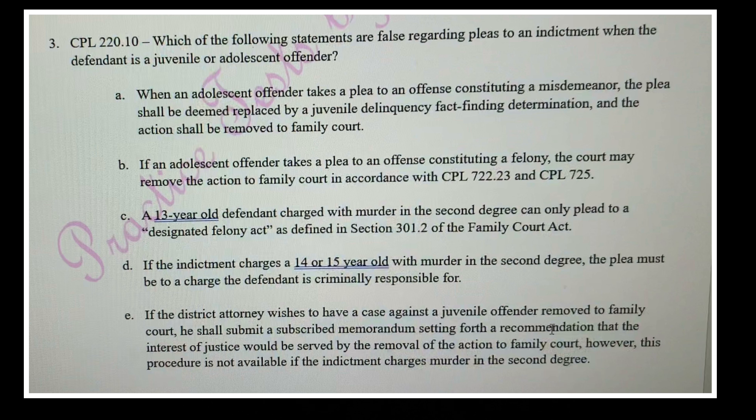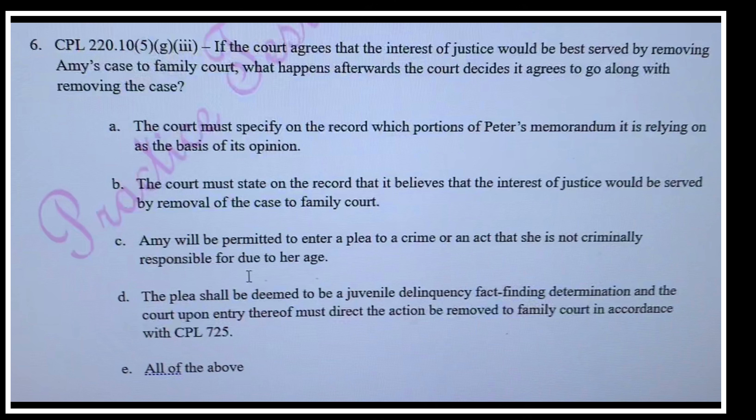The factors the DA has to show must include at least one of these: mitigating circumstances bearing directly on the way the crime was committed; if the defendant was not the only participant and their role was relatively minor but not minor enough to constitute a defense; possible deficiencies in the proof; if the person had no JD adjudications of committing a designated felony act; or that it's not a pattern of criminal behavior and is not likely to be repeated. Just one of those factors has to be alleged. This question is specifically about when the DA must file the memorandum stating one of those factors because of the type of charge.